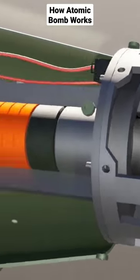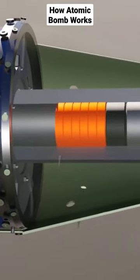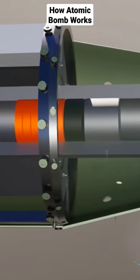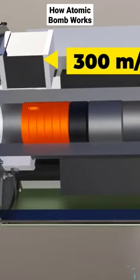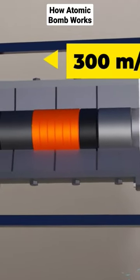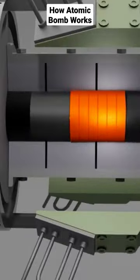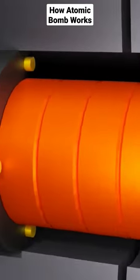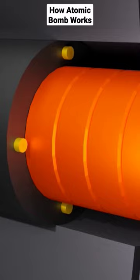This then launches the uranium projectile towards the opposite end of the gun barrel where the target is placed at a speed of 300 meters per second. Take note that when the impact happens, the four modulated neutron initiators are also activated.